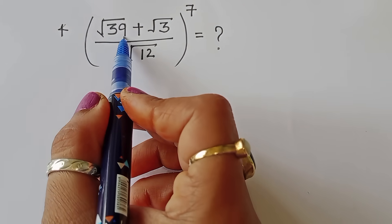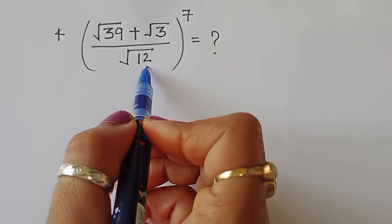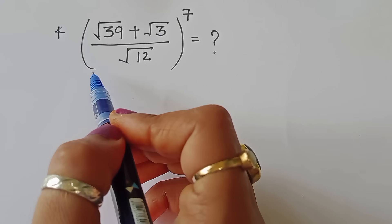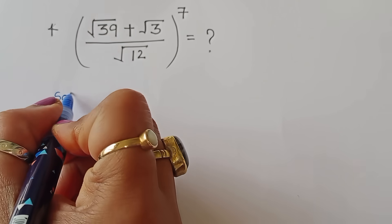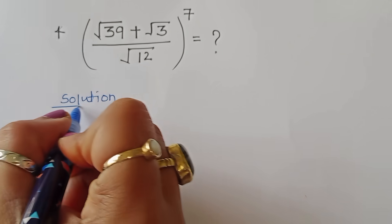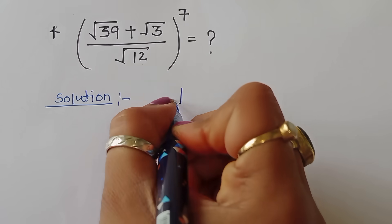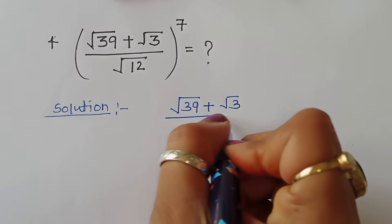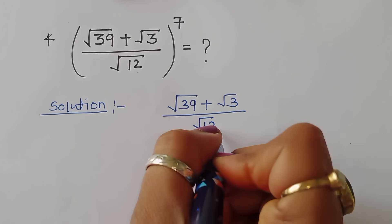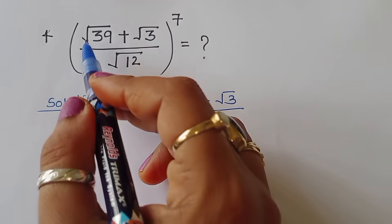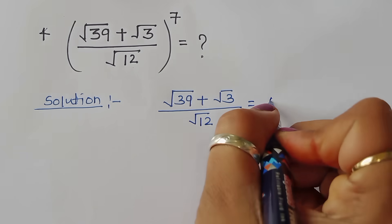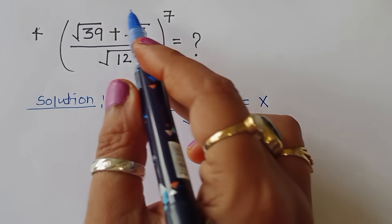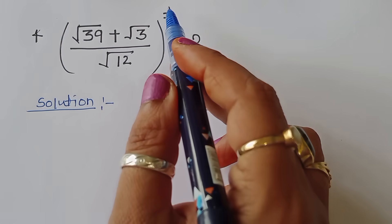The question is: given (√39 + √3) / √12, raised to the power 7, we have to find the value of this term. Let's see how we can find the solution. We consider this expression equal to x, so we have to find out the value of x to the power 7.